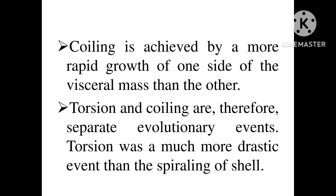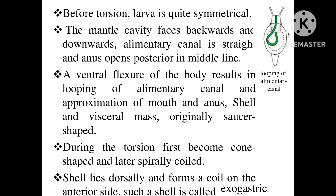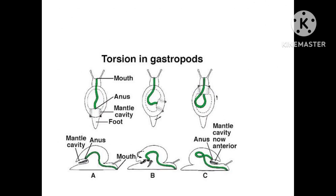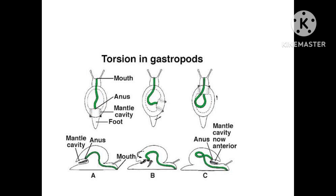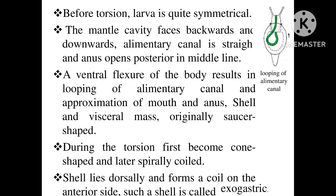Before torsion happens — that is, in the larval stage — the larva is quite symmetrical. The mantle cavity faces backwards and downwards, the alimentary canal is straight, and the anus opens posteriorly in the midline. These are the conditions before torsion: the mantle cavity, the anus, and the alimentary canal are all in their original positions.